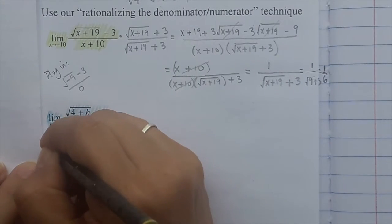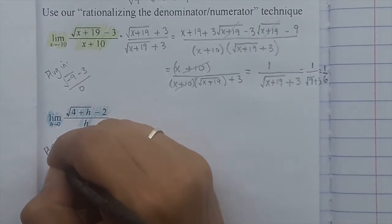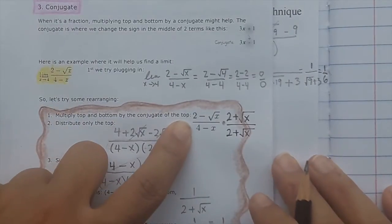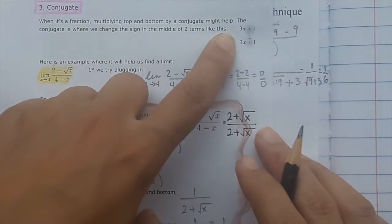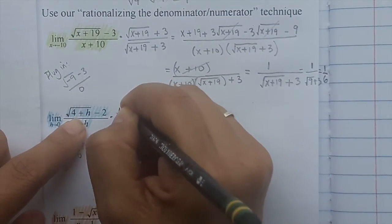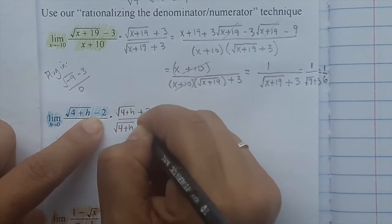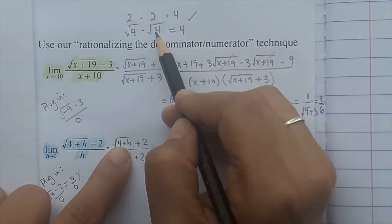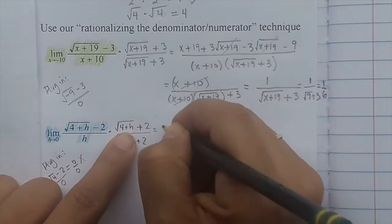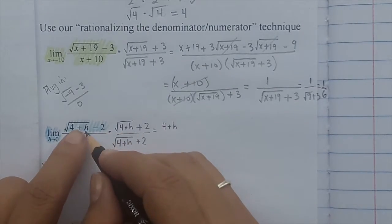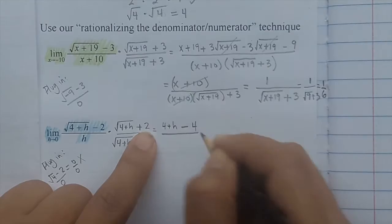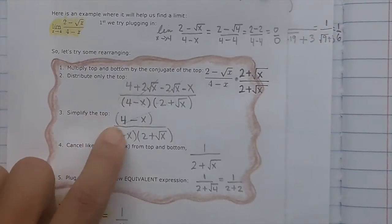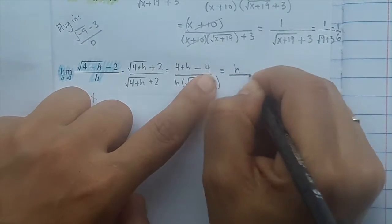Let's look at another example. Plug in first just to make sure the easy way doesn't work — put h=0, and it doesn't work. So we do the conjugate: multiply top and bottom, just changing the sign between the two terms. Multiplying out the top: radical times the same radical gives what's inside — just (4+h). The two middle terms always cancel. The only thing left is negative 2 times 2, which is negative 4, all over the bottom. Combining like terms, 4 minus 4 is 0, leaving h on top over the bottom.